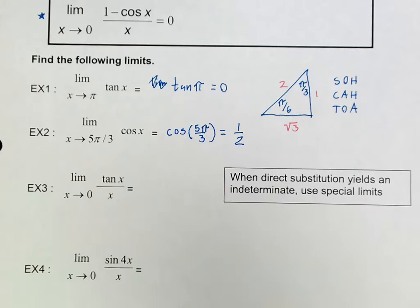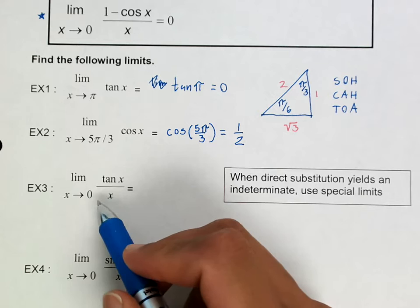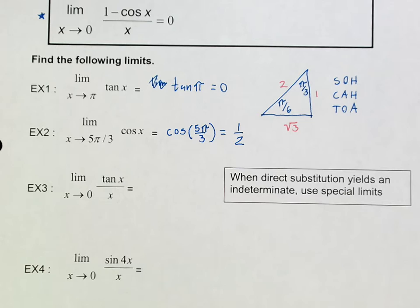Now on tangent x over x, the first thing we should try to do is plug in 0 for x. But notice that you're going to have a 0 in the denominator, so this is going to yield an indeterminate. And when you do that, we're going to have to play around with this and use some special limits.